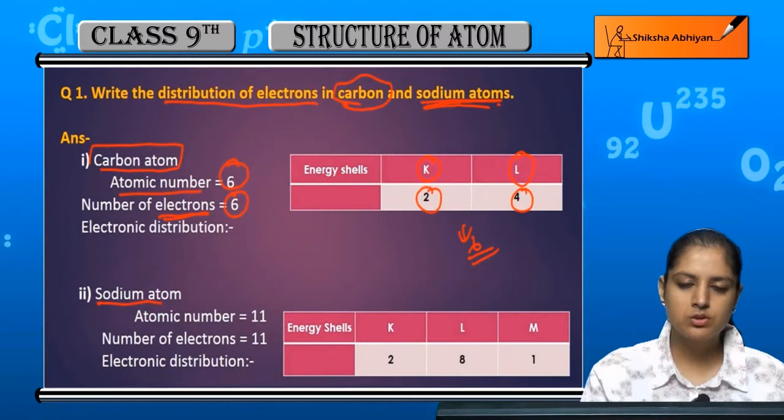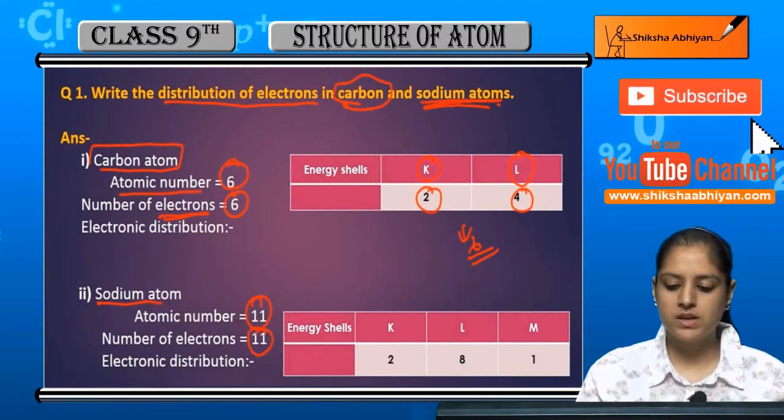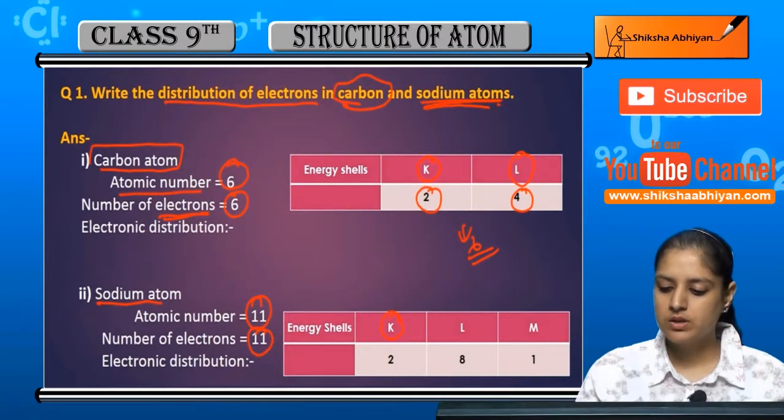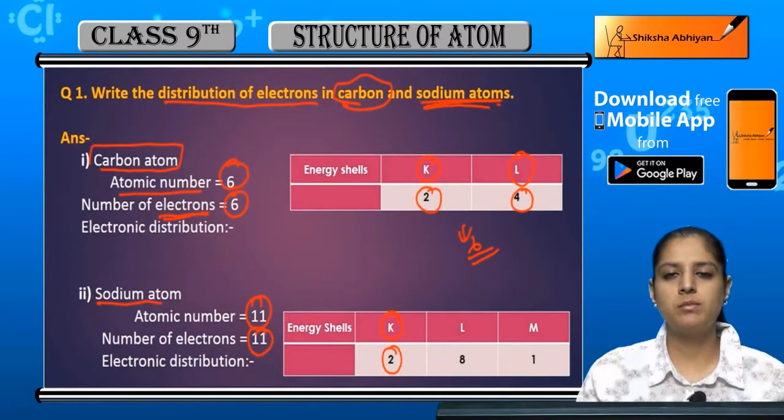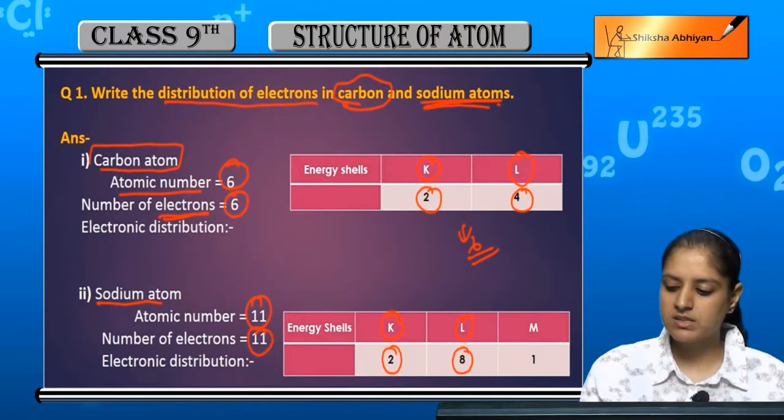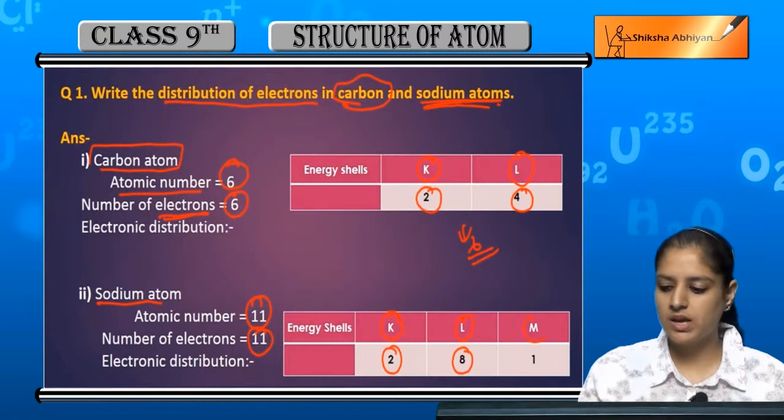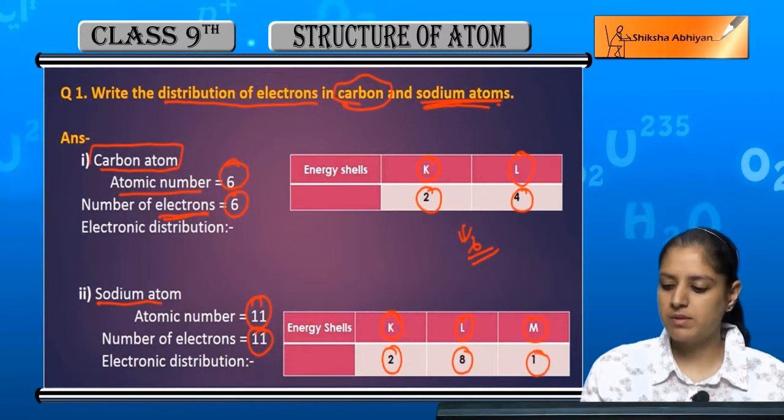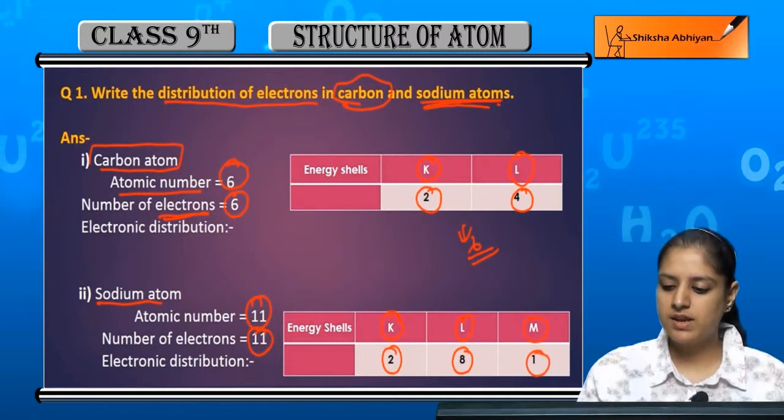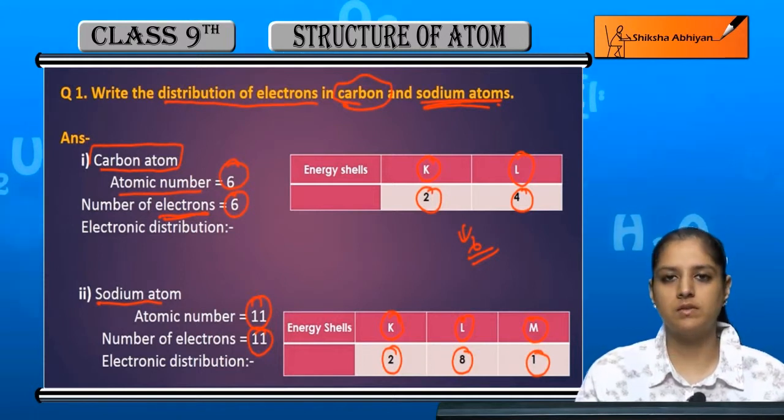Now sodium. Sodium atomic number is 11 and there are 11 electrons. So K shell is 2, because the maximum capacity of K shell is 2. L shell is 8, so 8 plus 2 is 10. So M shell is 1. So this is the electronic configuration of sodium atom. 2 plus 8 is 10, so 10 plus 1 is 11.